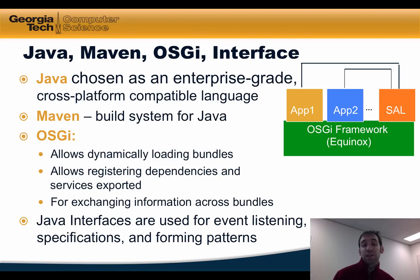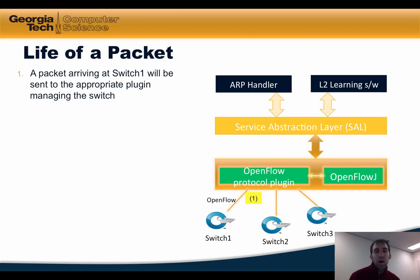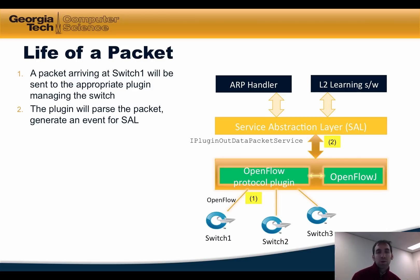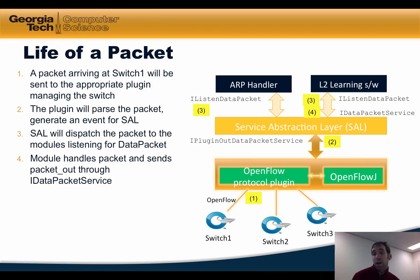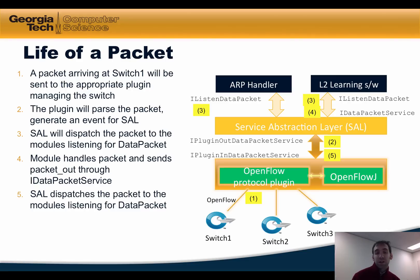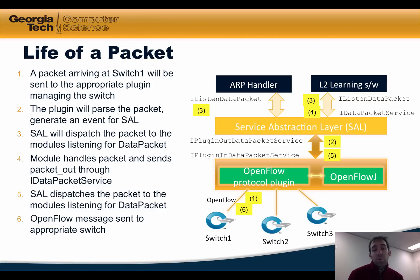OpenDaylight provides Java interfaces for event listening, specification, and various patterns. In the example we'll look at, a packet will arrive at a particular switch and will be sent to the appropriate plugin managing that switch at the controller. The plugin will parse the packet and generate an event for the Service Abstraction Layer. The SAL then dispatches the packet to modules listening for data packet events using the iListenDataPacket interface. These modules, such as an ARP handler or a MAC learning switch, handle the packet and send it out through the iDataPacket service. The controller will also send OpenFlow messages to the appropriate switches, such as flow modification directives.